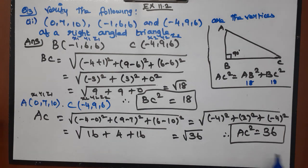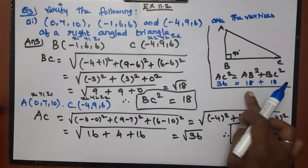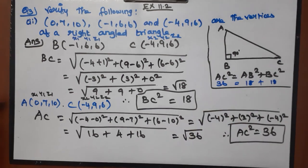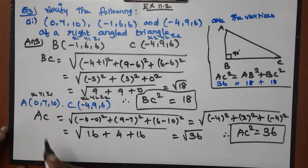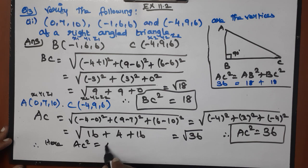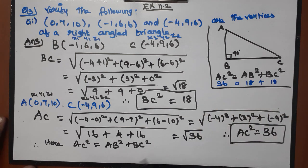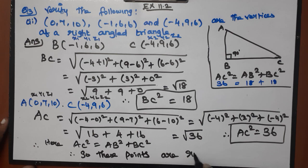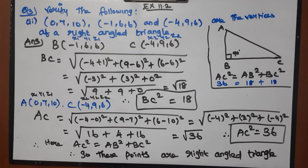Since AC² = AB² + BC², these points are the vertices of a right-angled triangle. This is easy to see — the problem demonstrates both an isosceles triangle and a right-angled triangle verification.